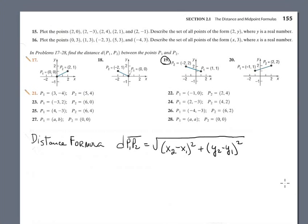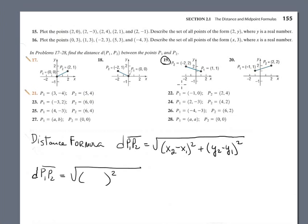Find the distance between point P1 and P2, figure 19. The distance P1P2 is equal to square root — subtracting the first component: X component is negative 2, minus negative 1, minus 2, minus negative 1. Plus the second component: 2 minus negative 1, all squared.